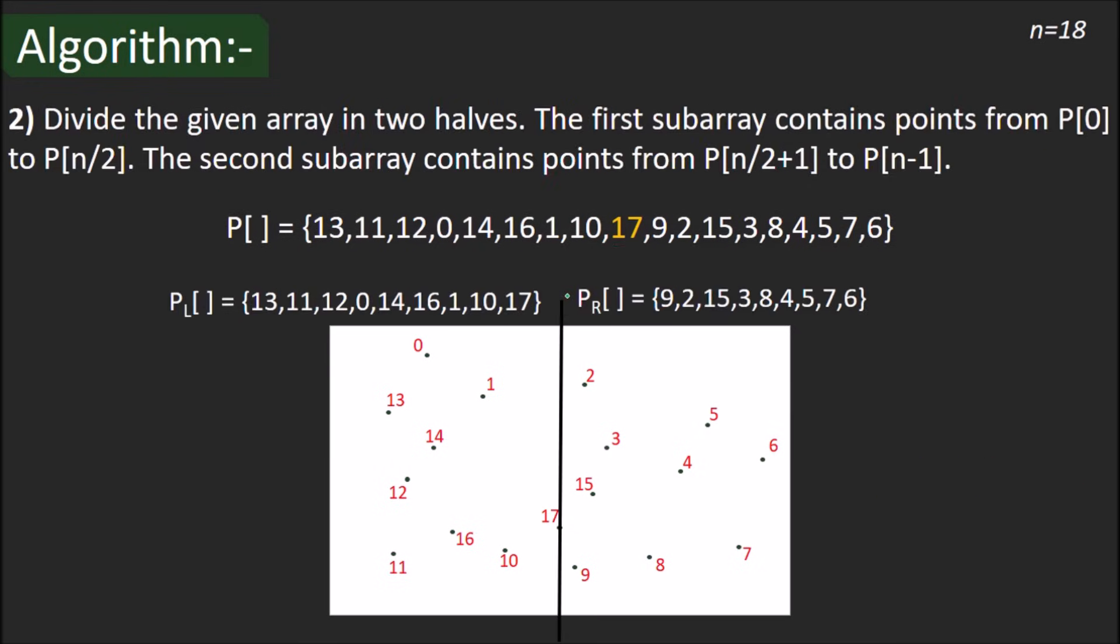The second step says divide the array in two halves. First having points from P[0] to P[n/2] and the other having the remaining points. As you can see, we have split the array in two subarrays PL and PR with 17 being the point of split and belonging to PL. On this graph, this divide step would look something like this and here 17 belongs to the left side of the line.